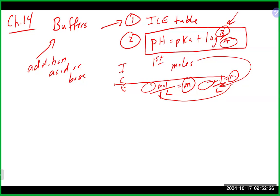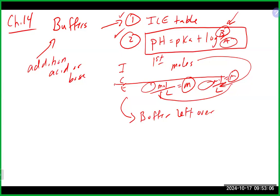Remember that if a buffer is working correctly and we do this calculation correctly, after the first ICE table you should still have a buffer left over. At that point, you could use one of your two options to figure out the pH. You can sort of test yourself — if it is a truly good functioning buffer and you didn't blow through the buffer in a problem, you should see the pH go down a little bit if you added acid, or up a little bit if you added base. If it was a good buffer, you shouldn't see a big giant swing in pH.